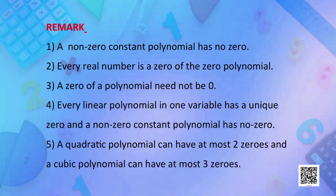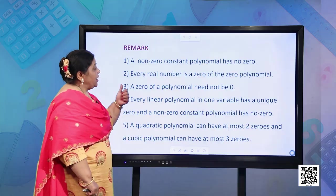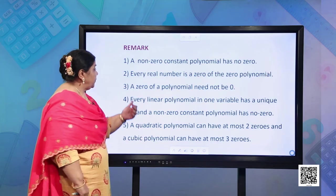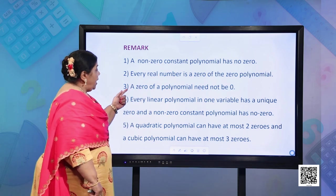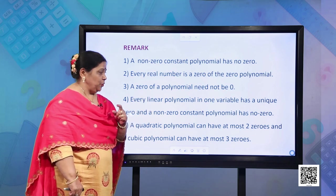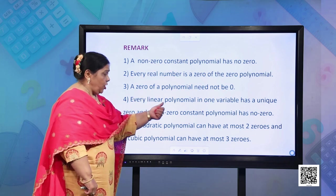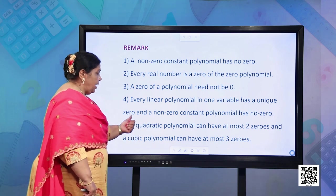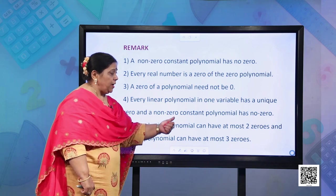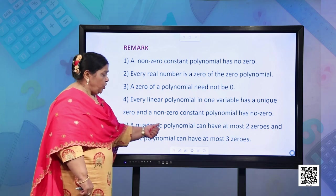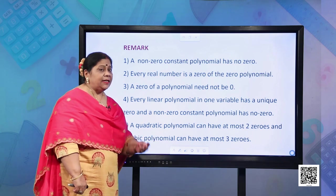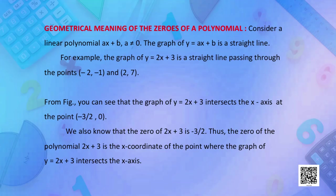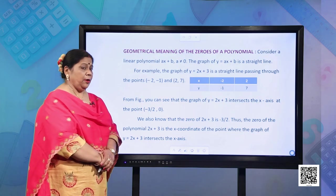Let us look into the important remarks. First, a non-zero constant polynomial has no zero. Every real number is a zero of the zero polynomial. A zero of a polynomial need not be 0. Every linear polynomial in one variable has a unique zero. A quadratic polynomial can have at most 2 zeros, and a cubic polynomial can have at most 3 zeros. With this, let us understand the geometrical meaning of the zeros of a polynomial.